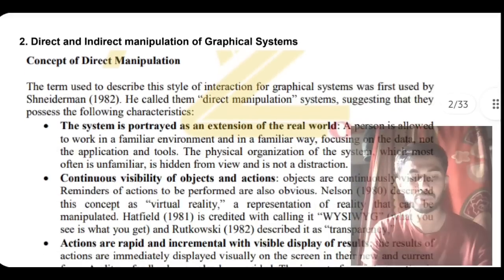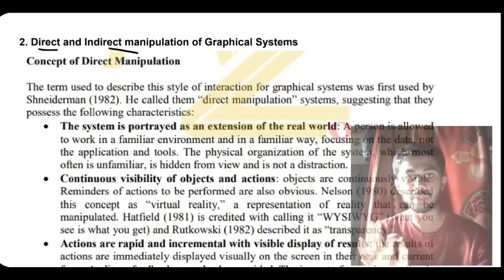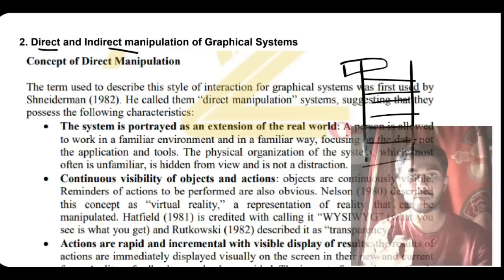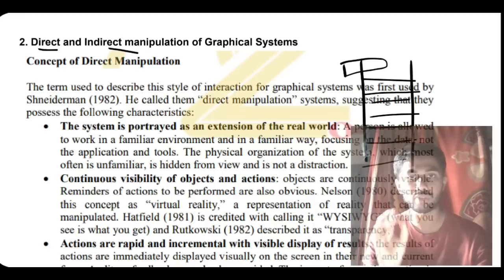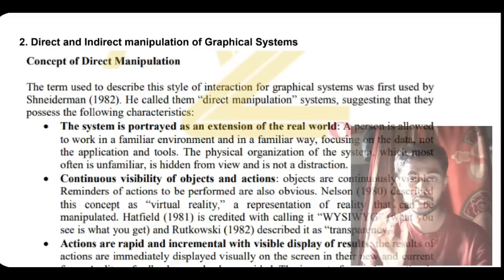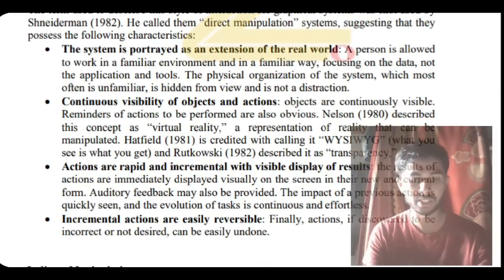The second super important question is direct and indirect manipulation of graphical systems. Manipulation means interacting with and making changes. Direct manipulation means you perform actions directly on screen — for example, clicking on a menu gives you options like file, open, close, insert, delete. Indirect manipulation means using an assistant or alternate input method — for example, a pointer for the blind or voice/speech recognition for people with disabilities.